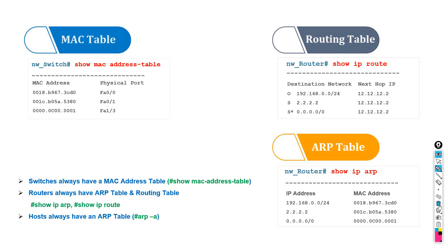Then what is a routing table? A routing table tells us the correlation between a destination network and the next hop IP address or interface.